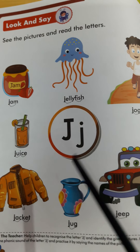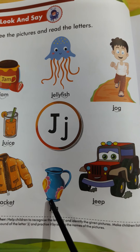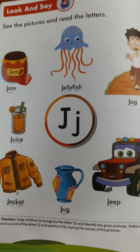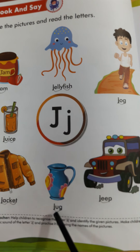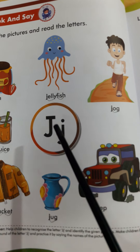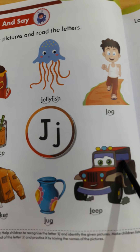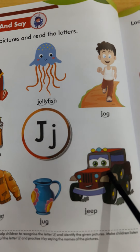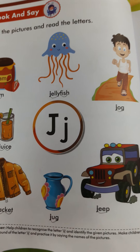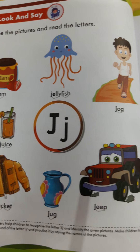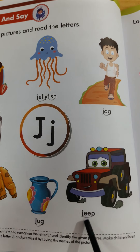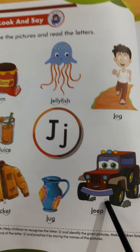Now J for jug. Jug mein kya rakha jaata hai? Paani. J. U. G. Jug. Now J for jeep. Jeep means kya hota hai? Jeep ek tarah ka vehicle hai, jo ki road pe hum log chalate hain. J. E. P. Jeep.